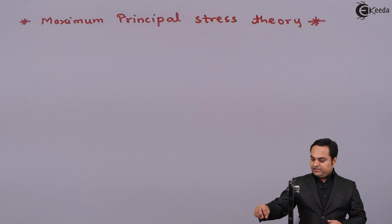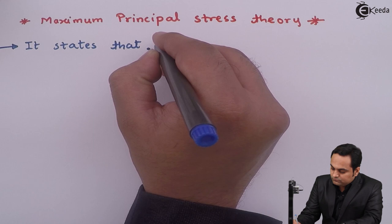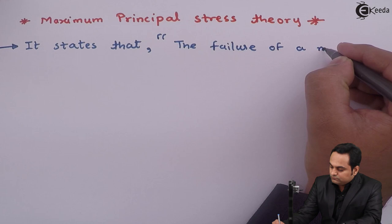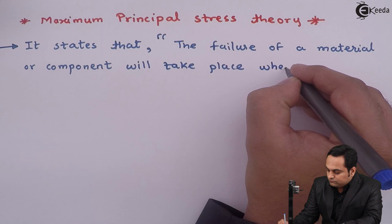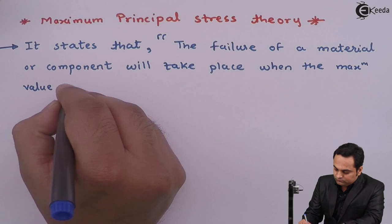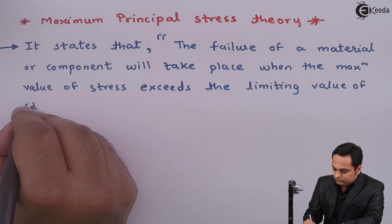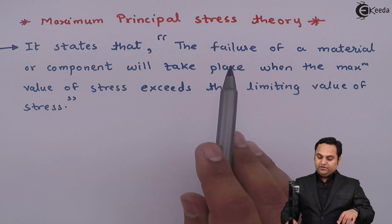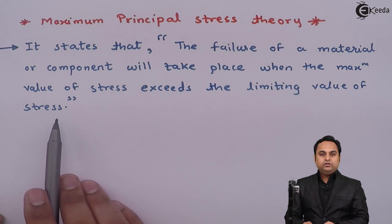The statement of maximum principal stress theory states that the failure of a material or a component will take place when the maximum value of stress exceeds the limiting value of stress.